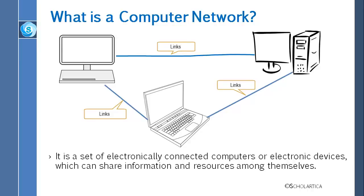In computer networks, network computing devices pass data to each other along data connections, also known as communication links. The connections or network links between nodes are established using either cable media like twisted pair, coaxial cable, or fiber optic cable, or it can be wireless media too.